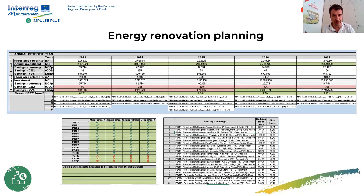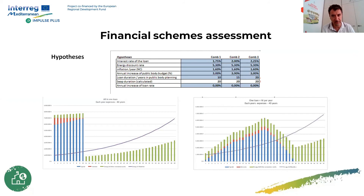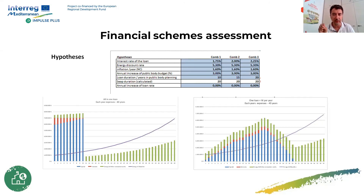These are some screenshots of the tool — the list of buildings and the overall figures year by year. We also applied the financial scheme assessment, conducting a study and analysis to define the most appropriate interest rates and parameters. On the lower left you can see the graph for one hypothesis: the overall loan. On the right side is the other hypothesis: the loan structured year by year.